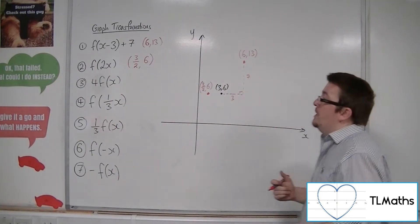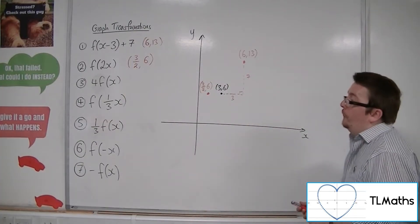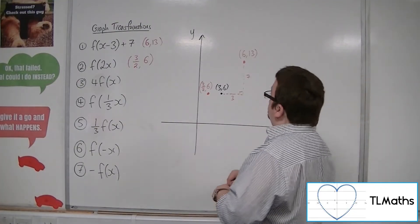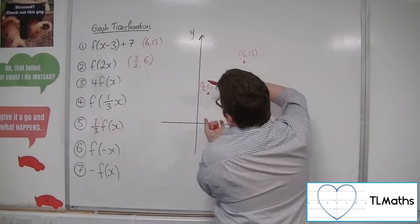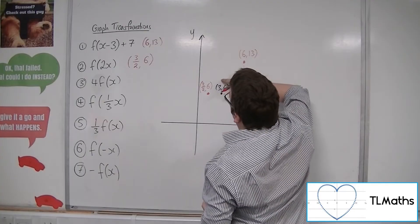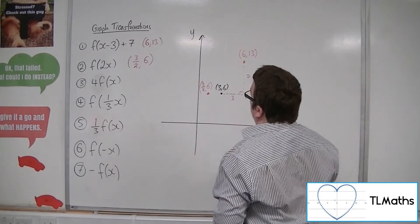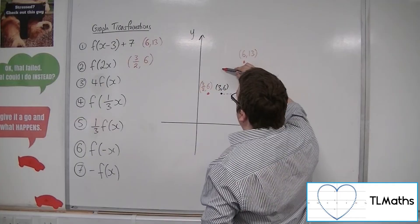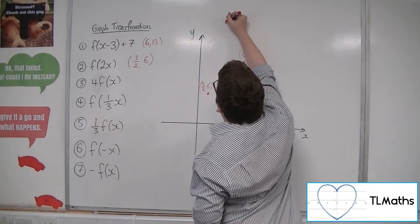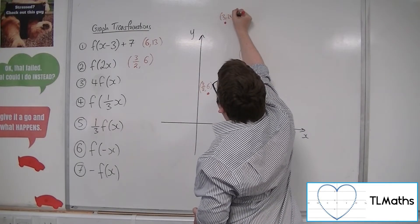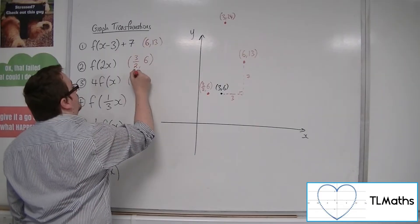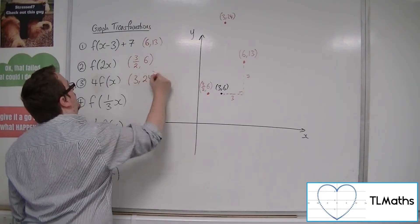Now for number 3, we've got 4 lots of f(x). So that's a stretch parallel to the y-axis this time, factor 4. And so this point will be stretched from the x-axis this time, all the way up. So it's now 4 times as high. So there's 3, 6, there's 3, 12, there's 3, 18, for example, and there's 3, 24, somewhere up here. So this would just apply to the y coordinate, or ordinate, would be 3, 24.